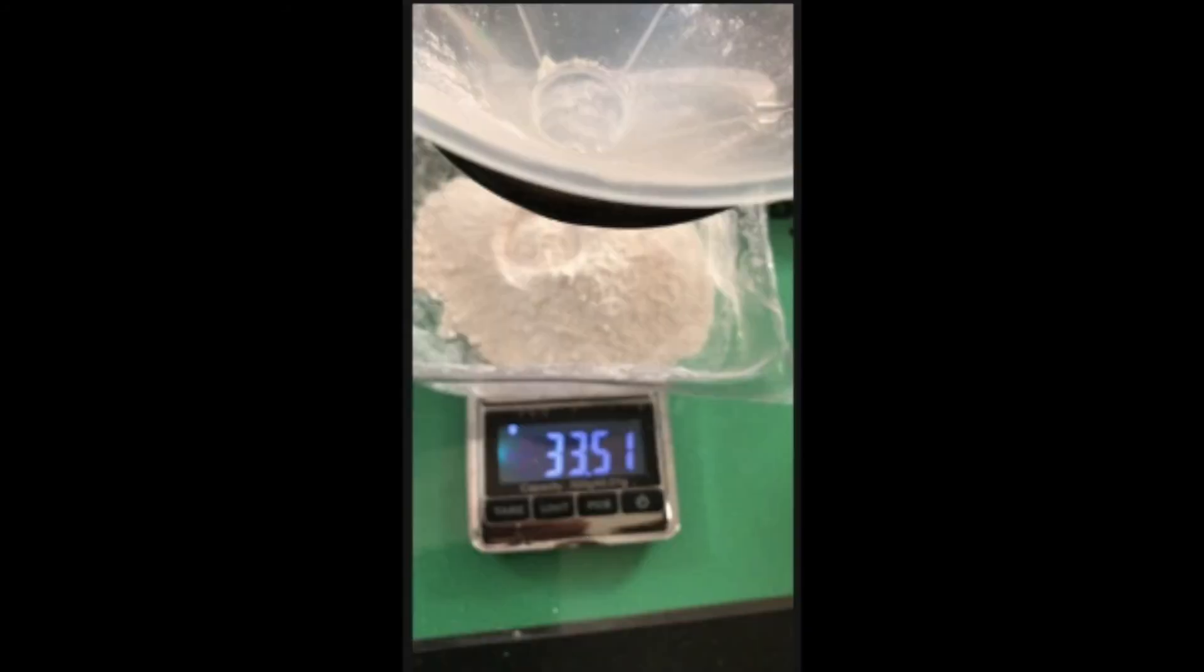I have the final yield of 33.51 grams of calcium hydroxide. This is really weird because the stoichiometry calculations had my predicted yield as 24.8 grams.